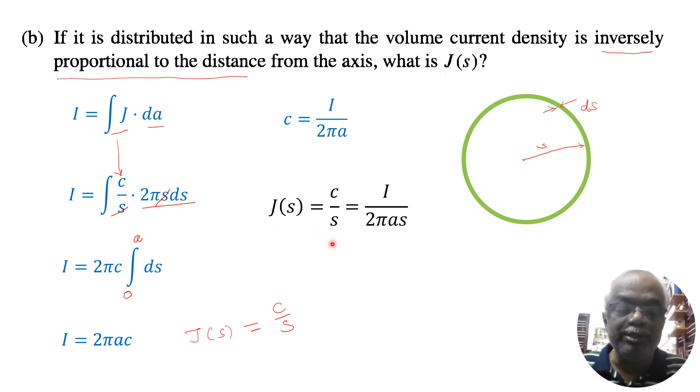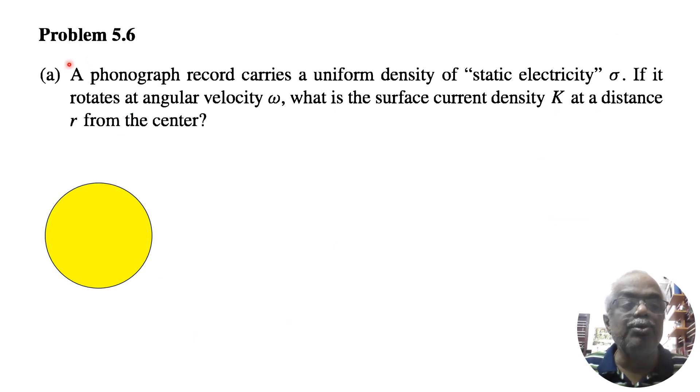Now we will move on to problem 5.6. Now we will see problem 5.6 A. This also contains 2 parts. So part A. Part A is a phonograph record carries a uniform density of static electricity sigma. If it rotates at an angular velocity omega, what is the surface current density K at a distance r from the center? So now this is a phonograph, is a circular disk. So we have to find the value of K at a distance r. This is let us say this is the center of the disk. We have to find the surface current density at a distance r from the center.